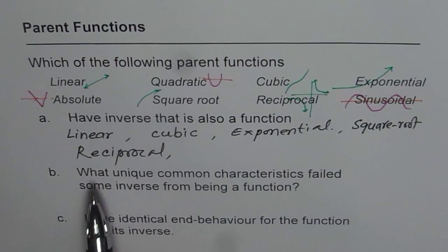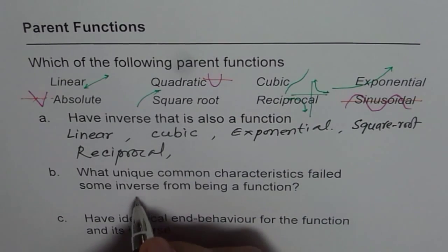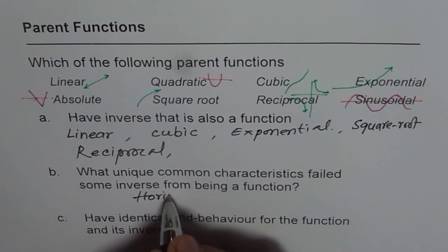Part B is related. It says what unique common characteristic failed some inverse from being a function? And that is our test, horizontal line test.